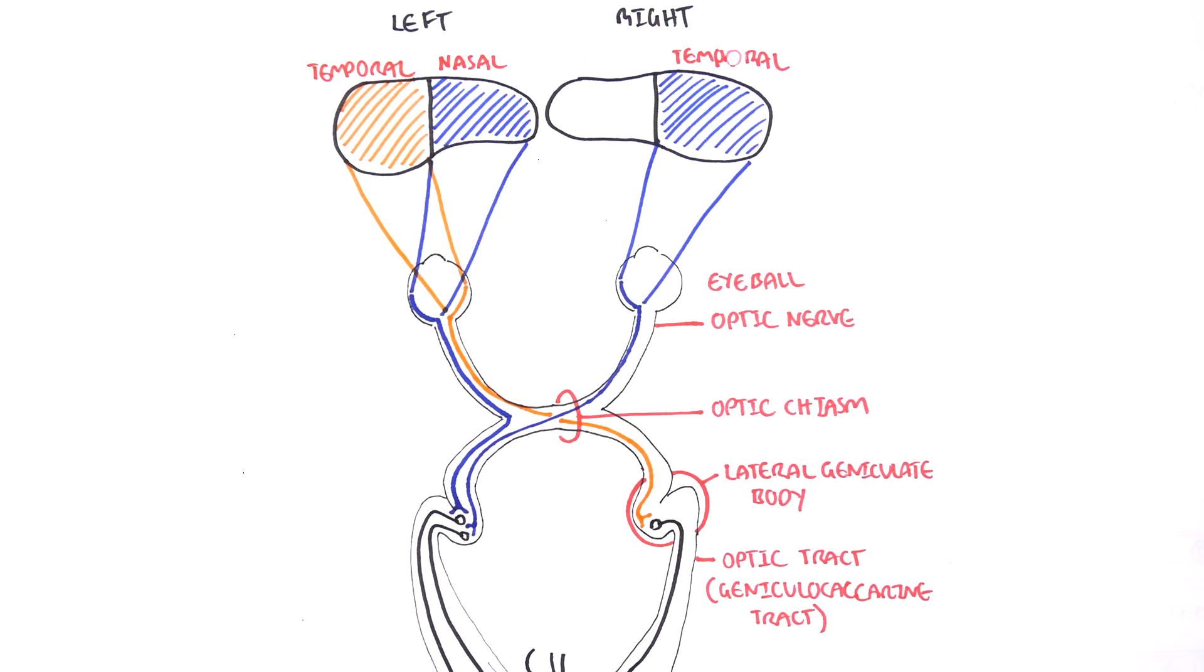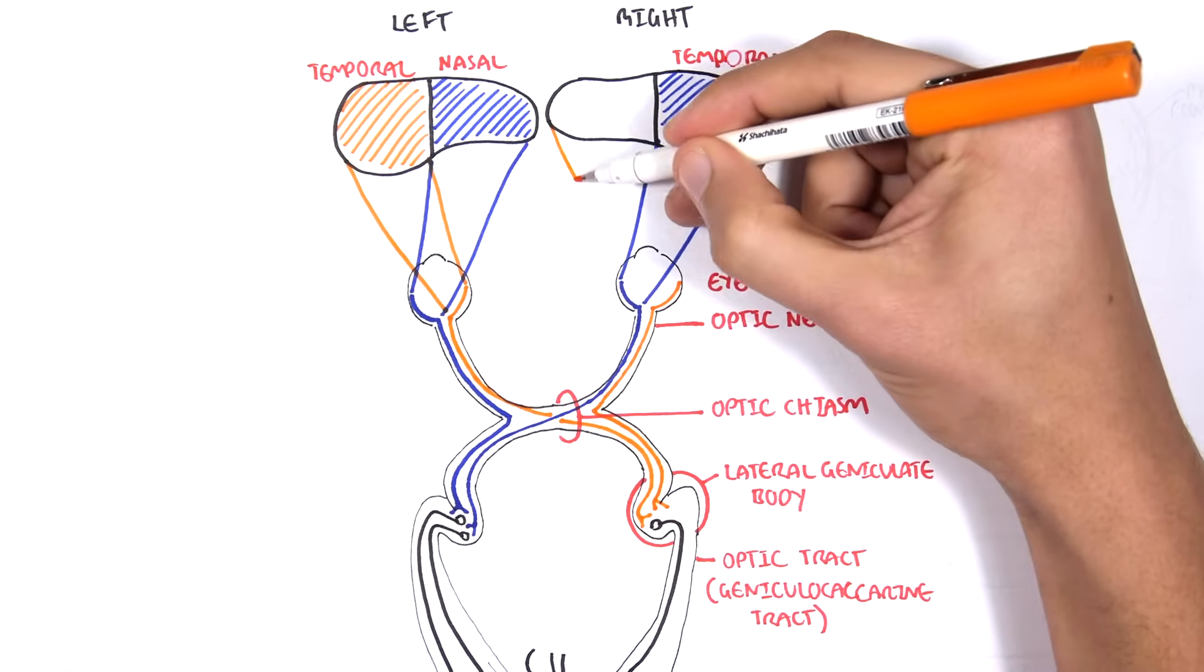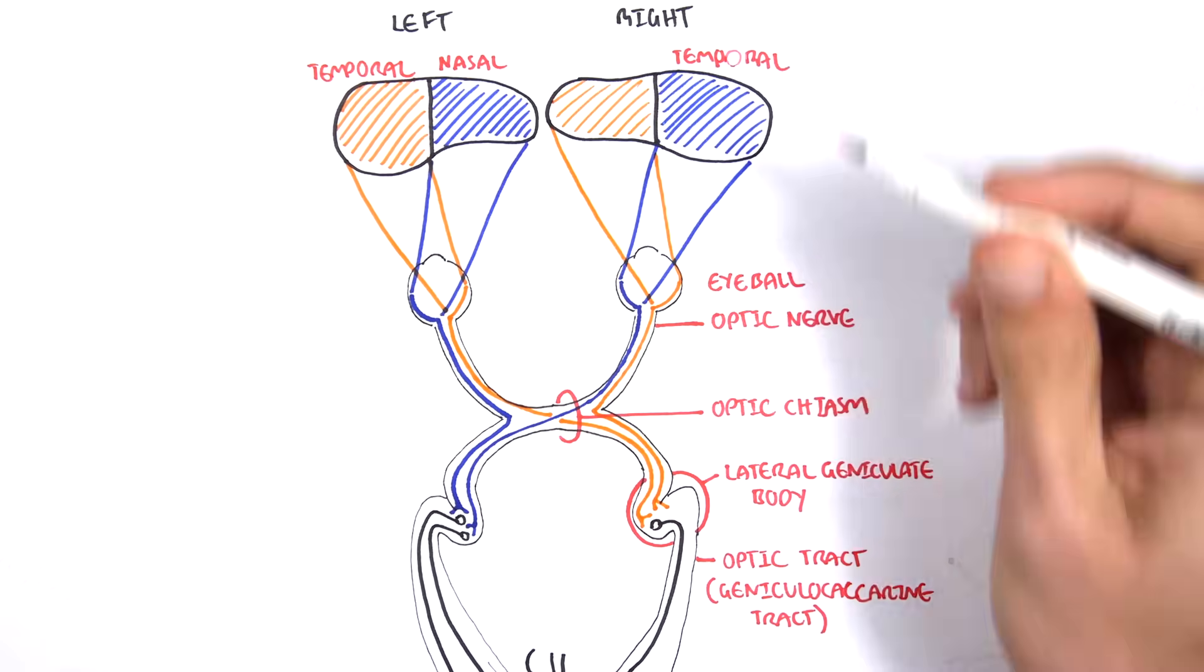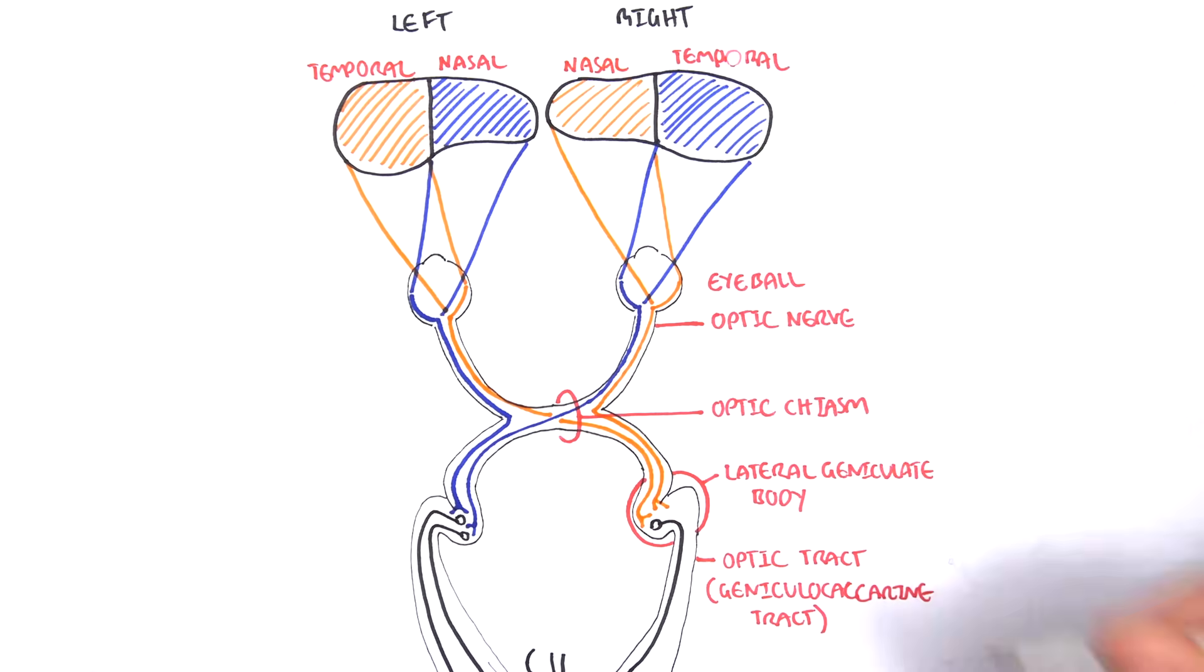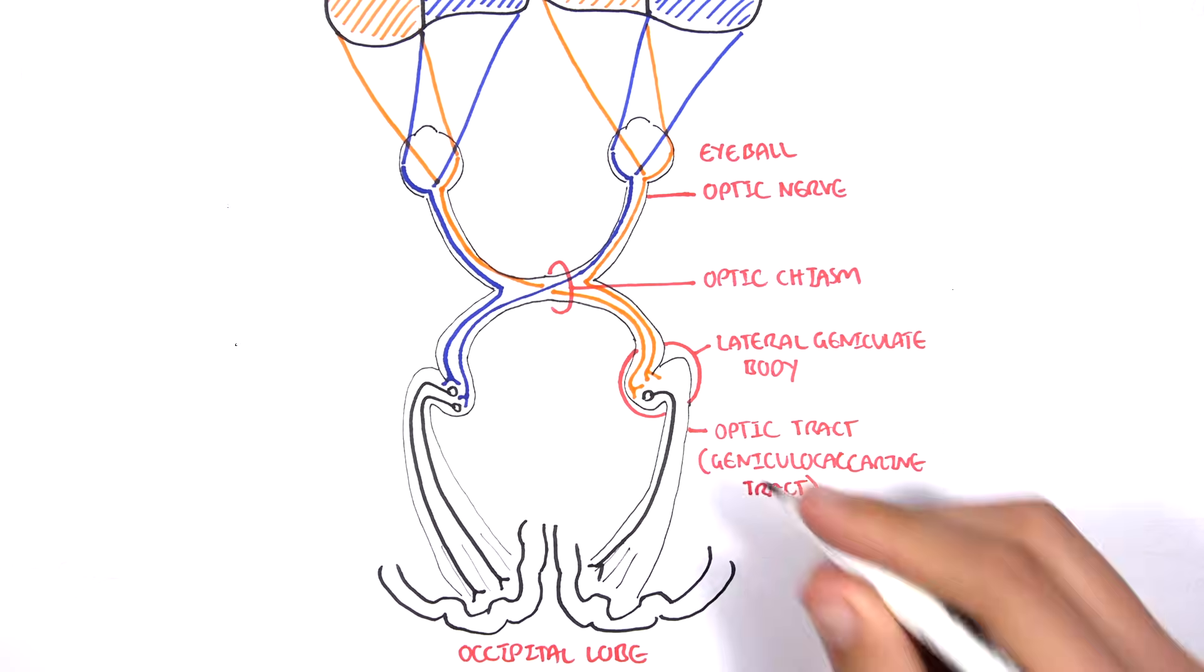Now similarly, the orange optic nerve of the right eye will capture the image from the right nasal visual field. It will not cross over but will remain and relay this information.